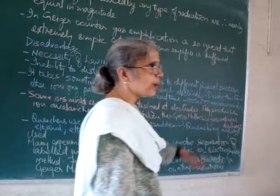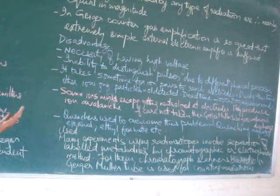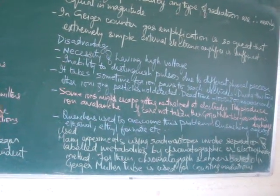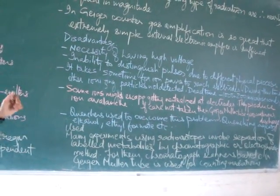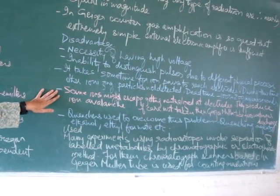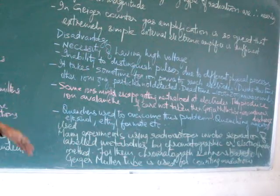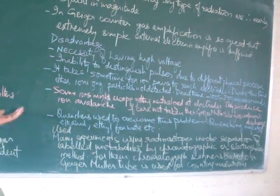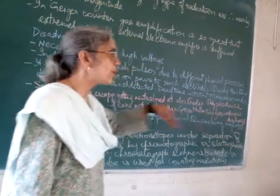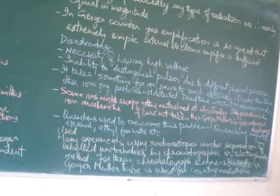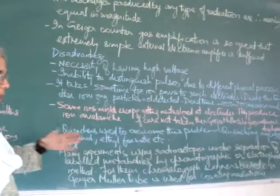This dead time is about 100 to 200 microseconds in case of Geiger counters which is too big, and some radioactive events may not be counted. Some ions might escape getting neutralized at the electrodes, recombine and produce an ion avalanche. If care is not taken the Geiger counter tube will go into continuous discharge and the instrument will get spoiled. To prevent this, quenchers are used.